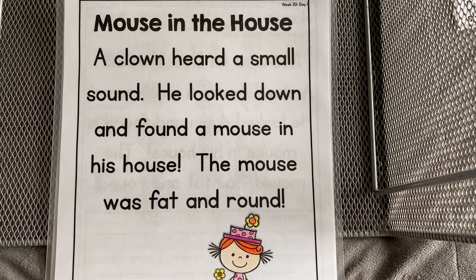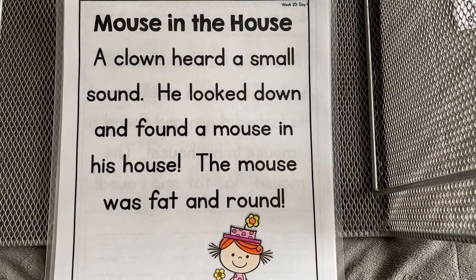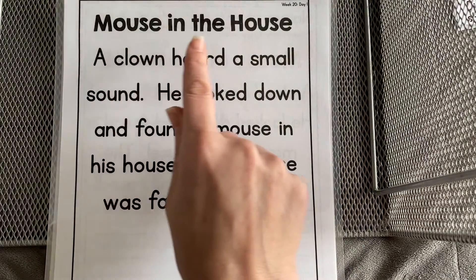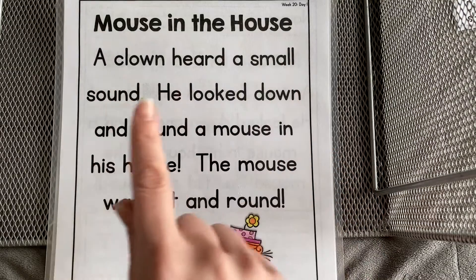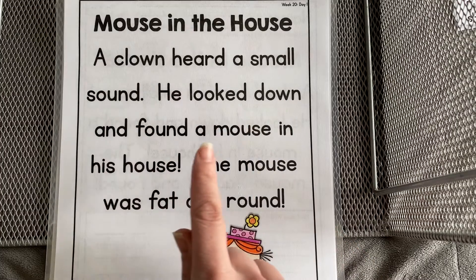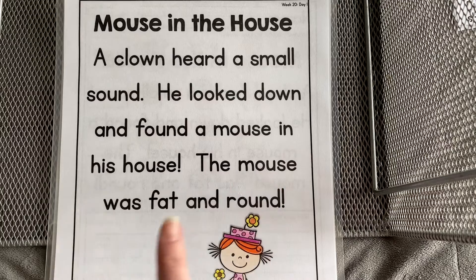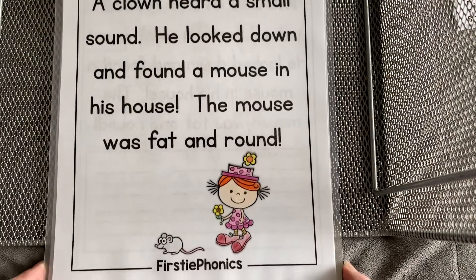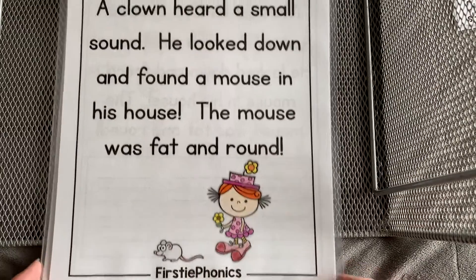Let's start by reading together. First, we start with the title: 'Mouse in the House.' Let's read it again — 'Mouse in the House.' A clown heard a small sound. He looked down and found a mouse in his house. The mouse was fat and round. There's the clown and there is the mouse in the house.